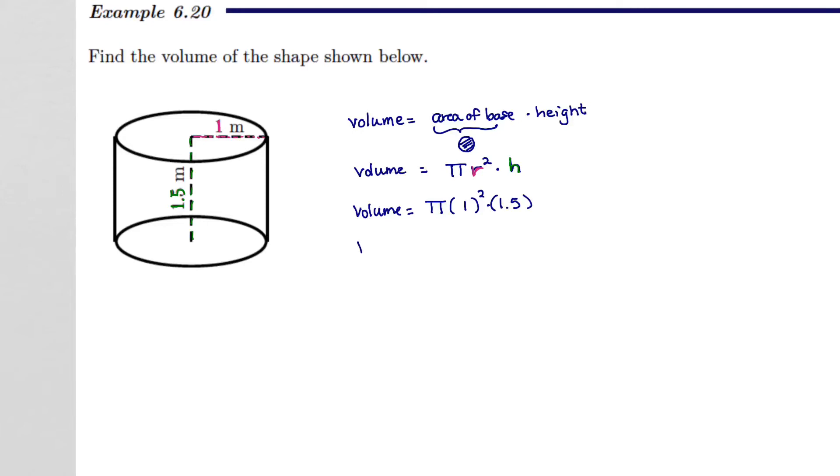That tells me that the volume for this cylinder is pi times 1 times 1.5. Or if I like, 1.5 pi, which I could also view as 3 halves pi.